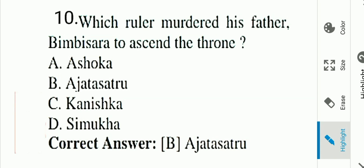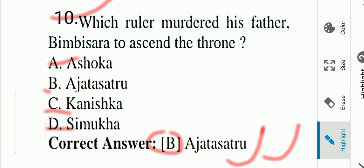Question number ten: Who murdered his father Bimbisara to ascend the throne? Options: A) Ashoka, B) Ajatashatru, C) Kanishka, D) Simuka. Answer is B, Ajatashatru. Ajatashatru murdered his father Bimbisara to ascend the throne. Option B is the correct answer. With this I conclude this video. I will meet you in the next video. Bye, see you soon.